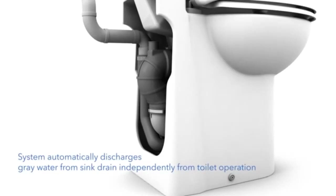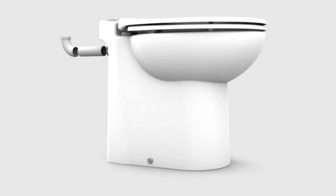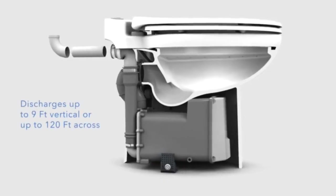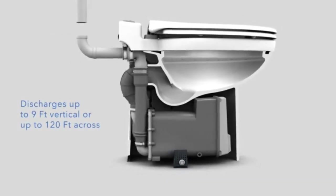This advanced toilet system automatically discharges gray water from the sink drain independently from the toilet operation. A 1-inch diameter PVC pipe would be used to discharge the gray water and macerated waste. This system can discharge the waste up to 9 feet vertical and up to 120 feet across.